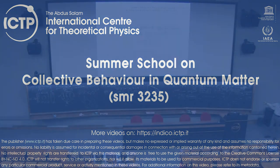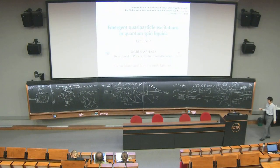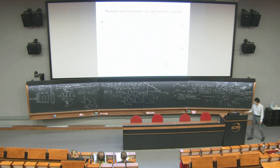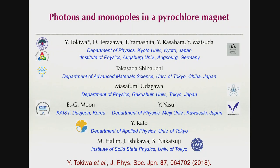I'd like to talk about the emergent photons and monopoles in the spin-liquid state of pyrochlore magnets.